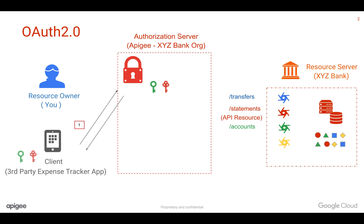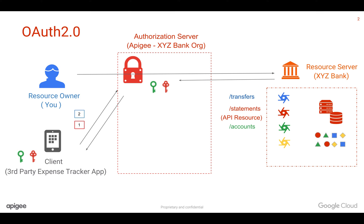The client stores this client key and secret. In the second step, the client sends this key and secret to the authorization server and asks for the consent of the resource owner. As a resource owner, you authenticate with the resource server and grant access to the application to access the statements API. During this process, the authorization server creates an authorization code and sends it back to the client.